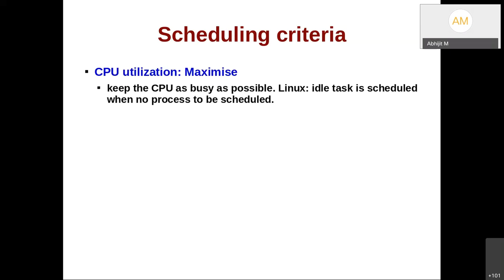On Linux there is a thread called the idle thread or idle task. If there are no processes to be scheduled — maybe no process is in the ready state or processes are mostly doing IO — then the CPU is said to be idle. The CPU will always keep executing something, so the OS must ensure something runs on the CPU even if there is no process to schedule. On Xv6, if you call the scheduler before the first process is created, the code will just keep running an infinite loop checking if there is a process to run. We want to maximize CPU utilization.